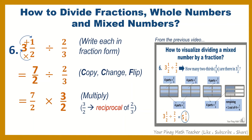Since nothing can be reduced, multiply both numerators: 7 times 3 gives 21. Then multiply both denominators: 2 times 2 gives 4. Since 21 over 4 is an improper fraction, we convert it to the mixed number 5 and 1 fourth.